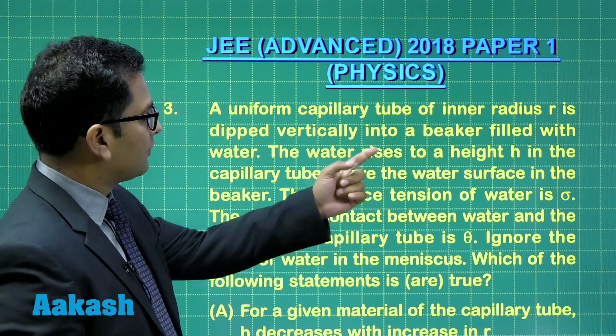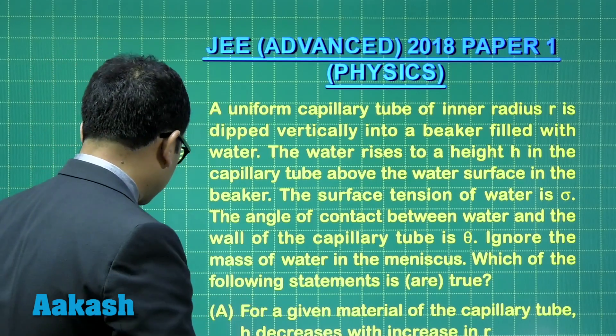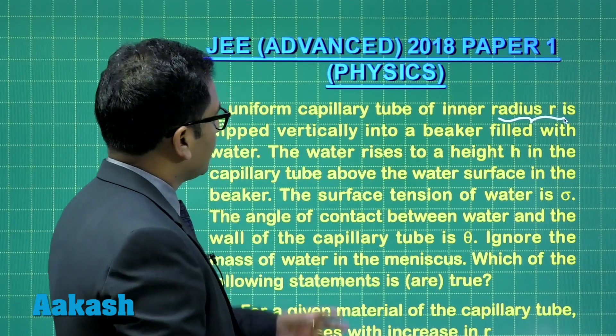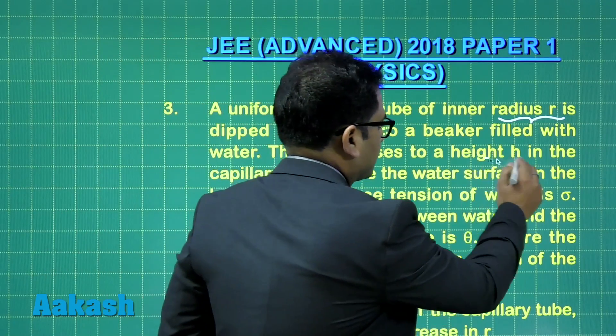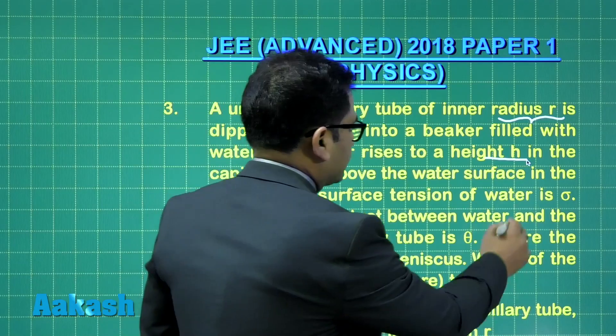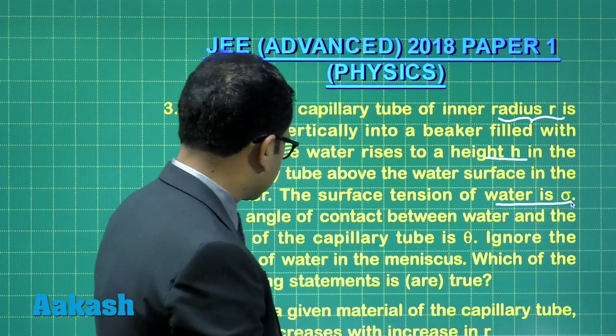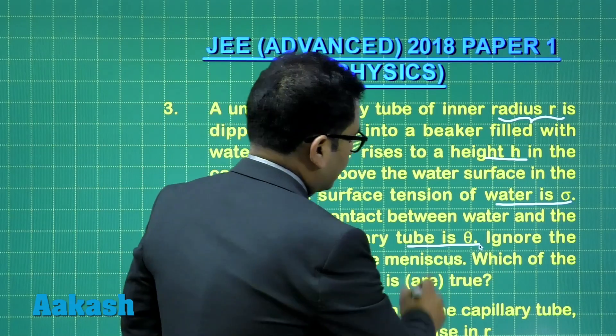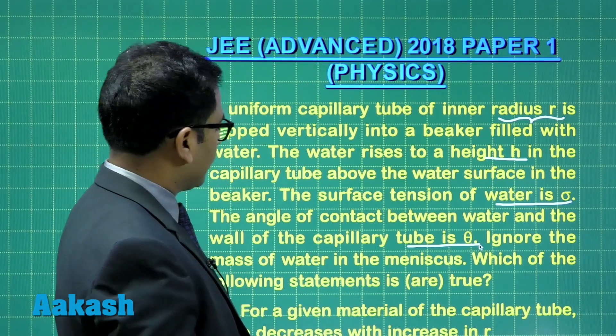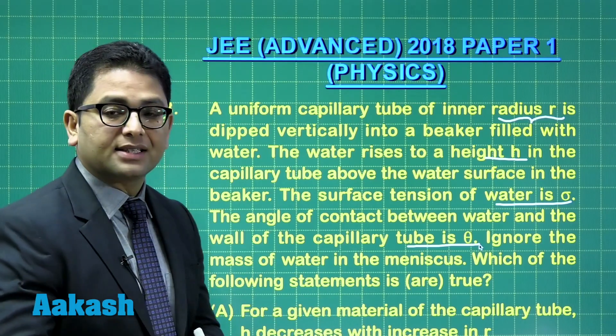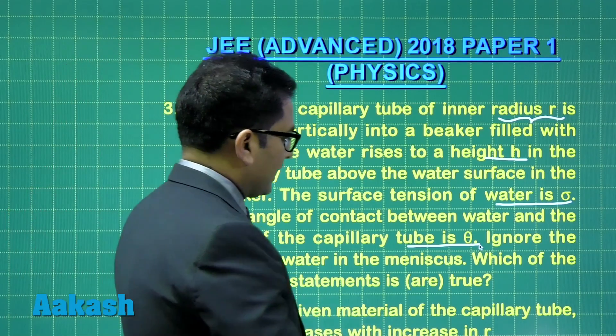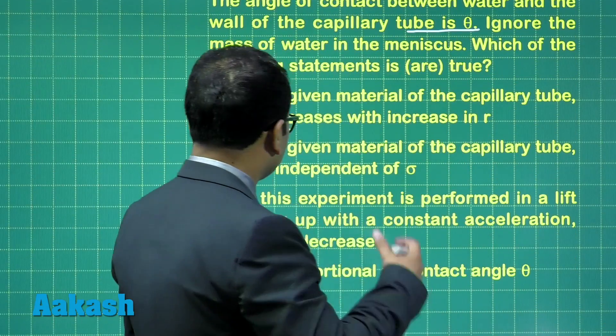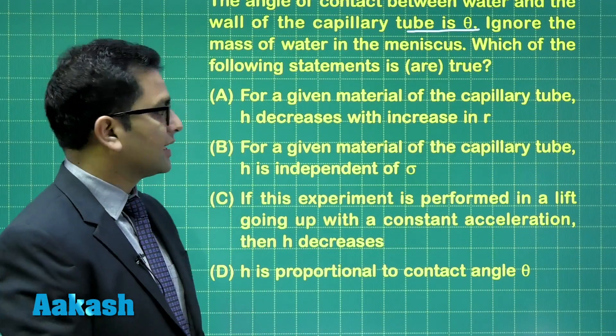It's a uniform capillary tube of inner radius r. Now be careful because the radius of the tube has been given as this. Water rises to a height h. The surface tension has been given, and the angle of contact between the water and the wall is given as theta. Ignore the mass of water in the meniscus. There are four straightforward options that test your knowledge of theoretical understanding.